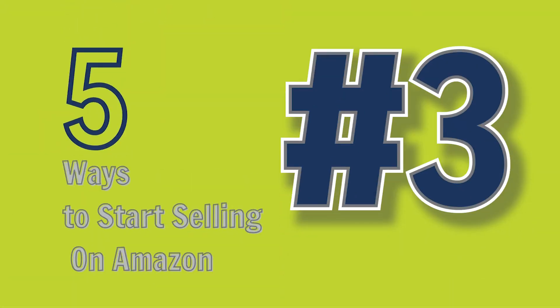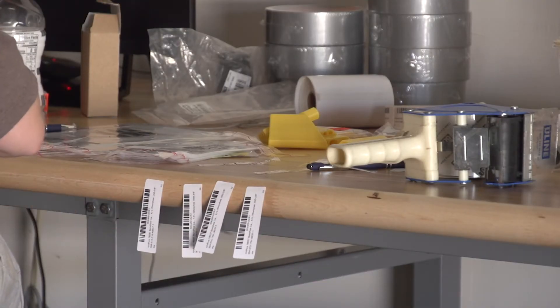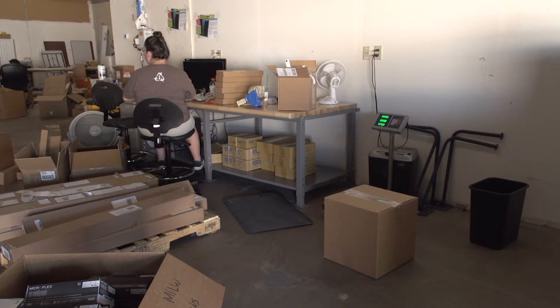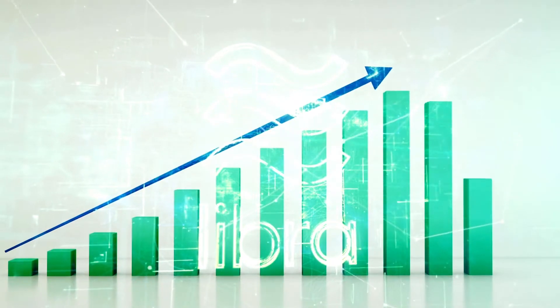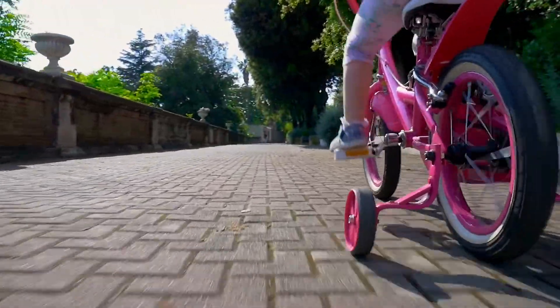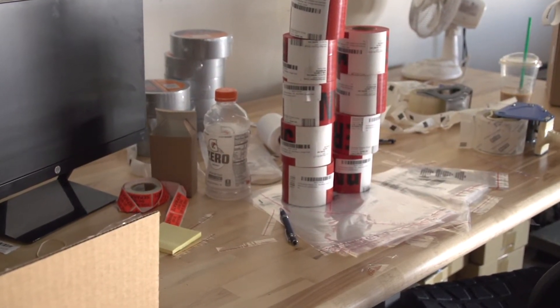The third model is wholesale FBA. What makes it awesome is you get access to name-brand products already selling on Amazon, and you can often buy hundreds or even thousands of units. The downside is it's harder to set up wholesale relationships if you don't have experience selling on Amazon. While it's a great way to grow a multi-seven or even eight-figure business, it's challenging to open those relationships without a track record on the platform. The first two models help you cut your teeth and gain experience before moving into wholesale.